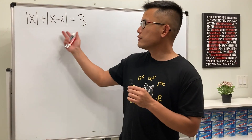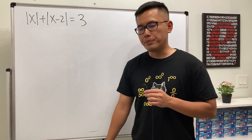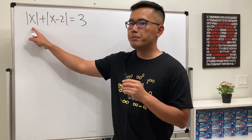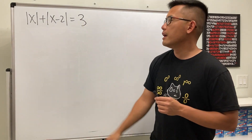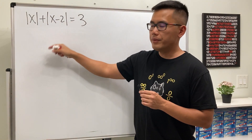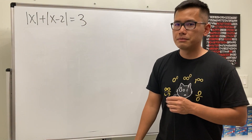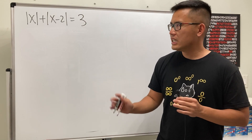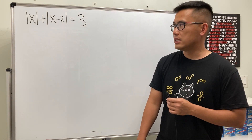Let's see how we can solve an absolute value equation that has two absolute value parts. Usually we get rid of the absolute value but we have to consider both the plus and minus cases. With two absolute values we'd end up with four cases — not ideal. Let me show you how we can work this out a better way.